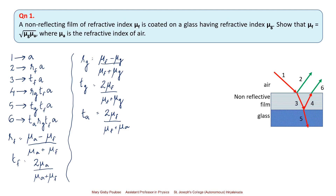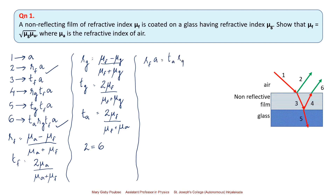For destructive interference between ray 2 and ray 6 — so that the film serves as a non-reflective coating — the second ray must cancel the sixth ray, meaning their amplitudes must be equal. This implies the amplitude of ray 2 equals the amplitude of ray 6: RF·A = TA·RG·TF·A. We can cancel the amplitude A from both sides.